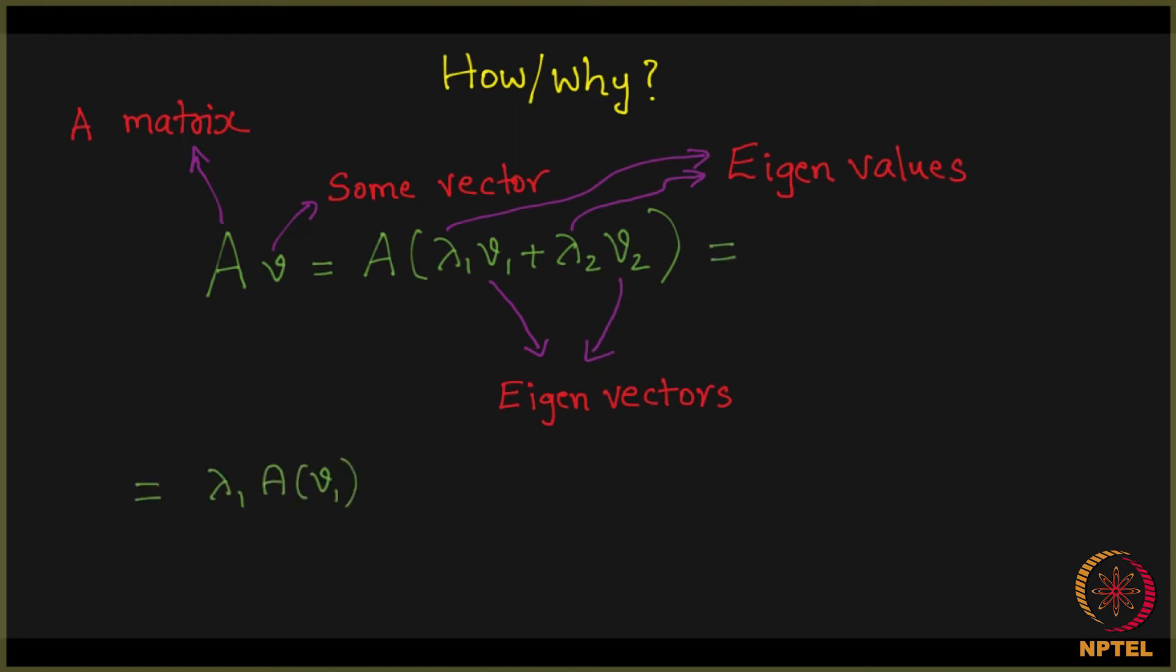Now what is this equal to? This is equal to A, a matrix, its application on a scalar lambda 1 times a vector V1. You can always pull out the scalar here. So you can write it as lambda 1 A times V1 plus lambda 2 A times V2. But then observe carefully, what are V1 and V2? V1 and V2 are eigenvectors. If they are eigenvectors, you can further write this A of V1 as lambda 1 times V1. A of V1 is lambda 1 times V1, A of V2 is lambda 2 times V2, and you finally get this.